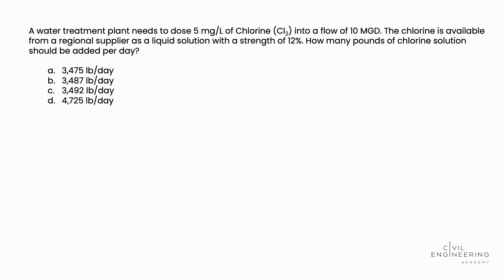A water treatment plant needs to dose 5 milligrams per liter of chlorine, CL2, into a flow of 10 million gallons per day, MGD. The chlorine is available from a regional supplier as a liquid solution with a strength of 12%. How many pounds of chlorine solution should be added per day?